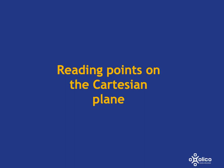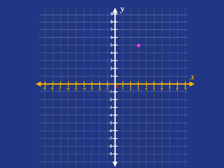We're now going to look at reading off points from the Cartesian plane. So, if we have that nice little pink point over there, what's the name of that pink point? Well, to get the name of a point, we need to get its x-coordinate and its y-coordinate.